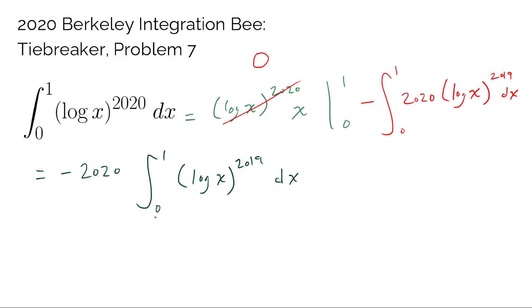You can do exactly the same thing to this integral, which is going to take out negative 2019 out of it. So now we're going to have negative 2020 times negative 2019, and we have integral from 0 to 1 of log of x to 2018 dx, and you can just continue this process.